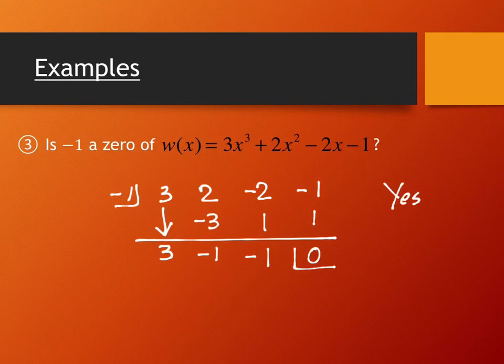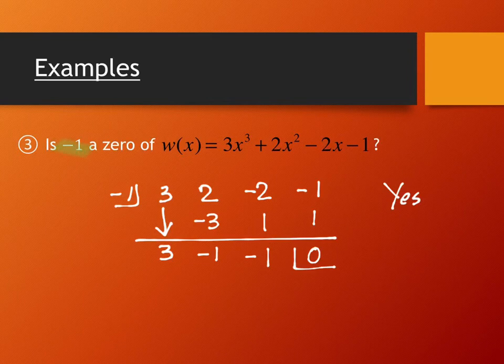This is equivalent to asking: is 2 a factor of 8? Yes, because 8 divided by 2 gives remainder 0. But 2 is not a factor of 9 because there's a remainder of 1. We're doing the same thing here. You can also check by substituting negative 1 into the original function—if you get zero output, your synthetic division matches and you're correct.